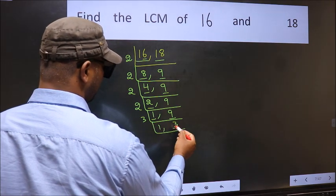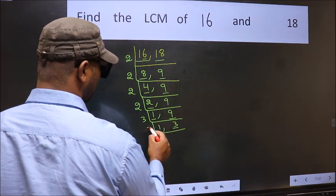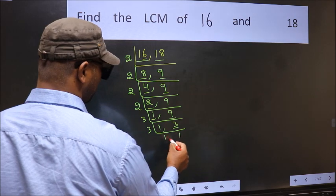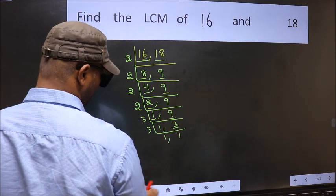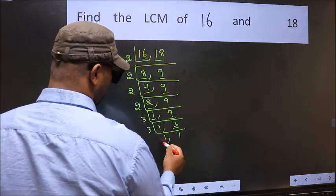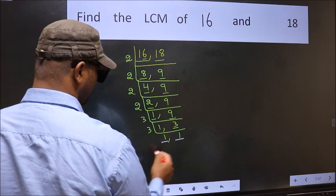Now we have 3. 3 is a prime number, so 3 ones are 3. So we got 1 in both the places.